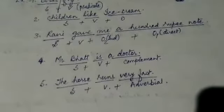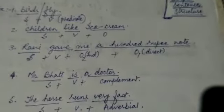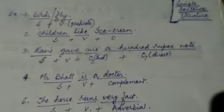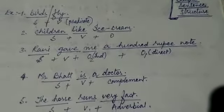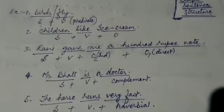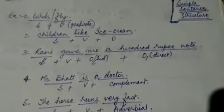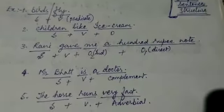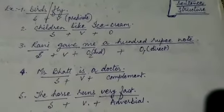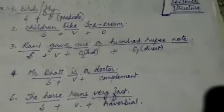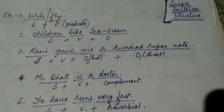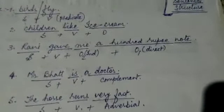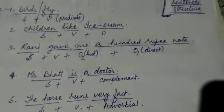The third sentence is Ravi gave me a hundred rupee note. Here Ravi is the subject, gave is the verb, and me a hundred rupee note is the object. Me is the indirect object and a hundred rupee note is the direct object. Now whenever we find this type of sentence and get confused, we have to simply keep one thing in mind: the indirect object will always be a human being or a living being.